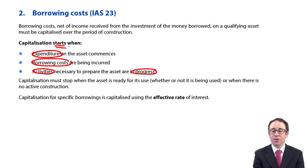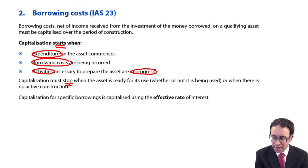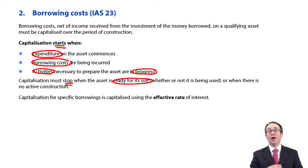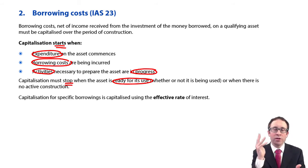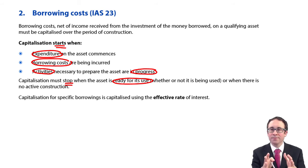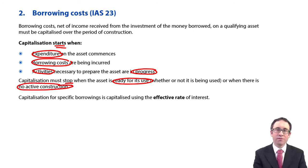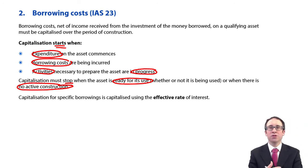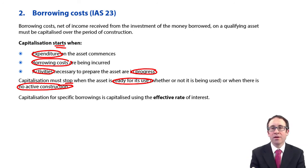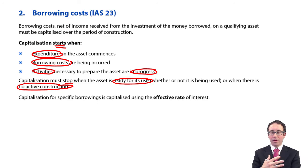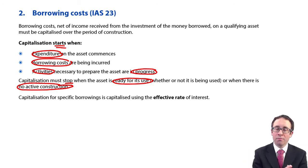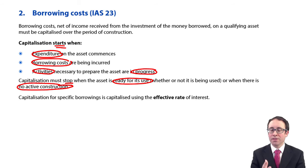Capitalisation must stop when the asset is ready for use. So if it is complete and ready to be used, we stop the capitalisation of borrowing costs. However, if it is not being used, that doesn't matter — as long as it is ready for use. Also note, if there is no active construction taking place — such as due to strike action or bad weather — then there are no activities taking place. We must temporarily stop the capitalisation and expense the borrowing costs to profit or loss. Once the strike is over or the bad weather is complete, we can then go back to capitalising the costs.